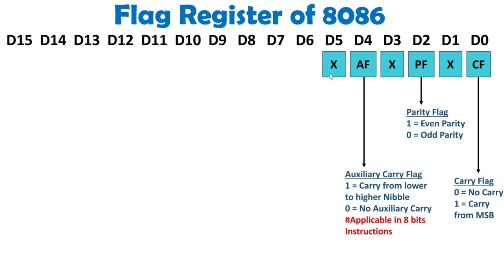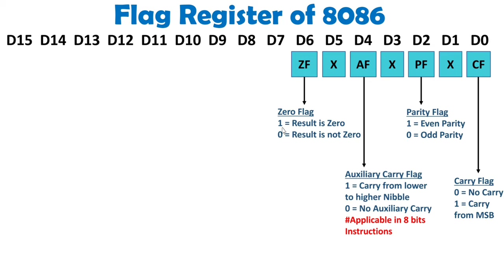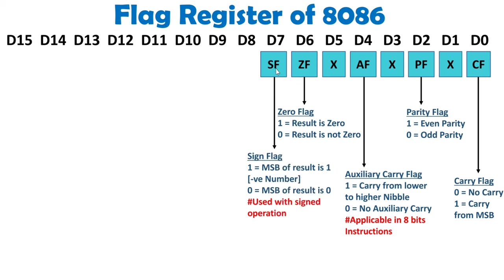D5 is don't care, and D6 has the zero flag. During an operation, if the result is 0, this flag gets set to 1; if the result is not 0, it will be 0. For example, if you decrement a register and it is not 0, this flag will be 0, but after decrement, if that register has a value of 0, the zero flag gets set to 1. D7 shows the sign flag, used with signed operations only. It gives you information about the MSB of the data — if MSB is 1, the data is a negative number; if MSB is 0, the data is a positive number.